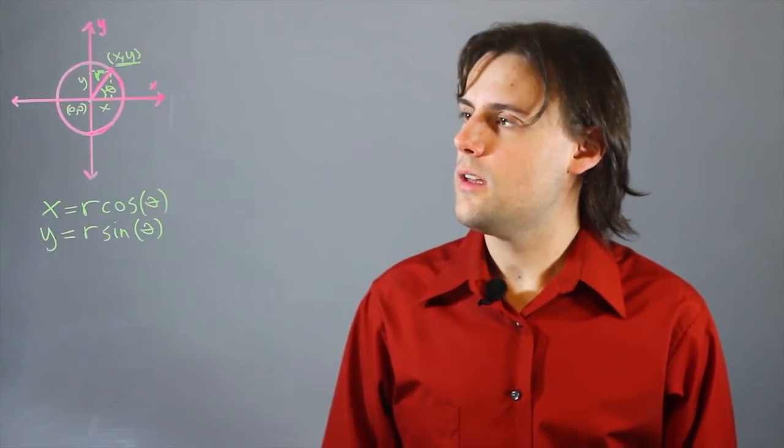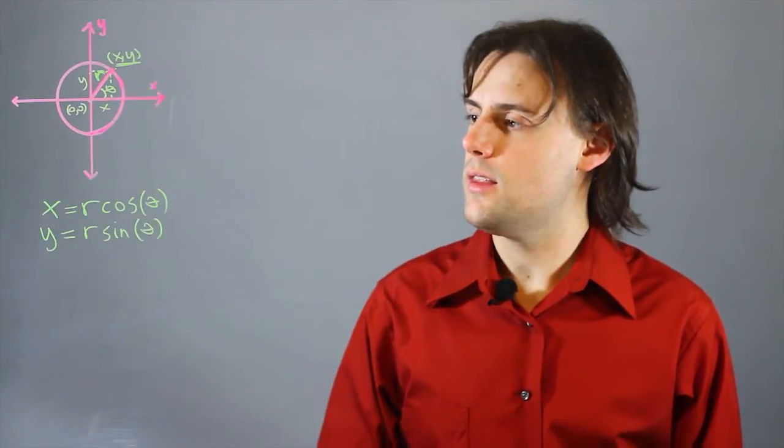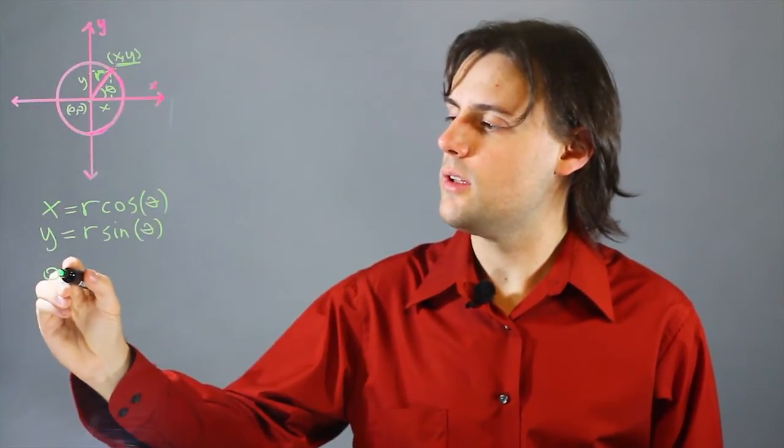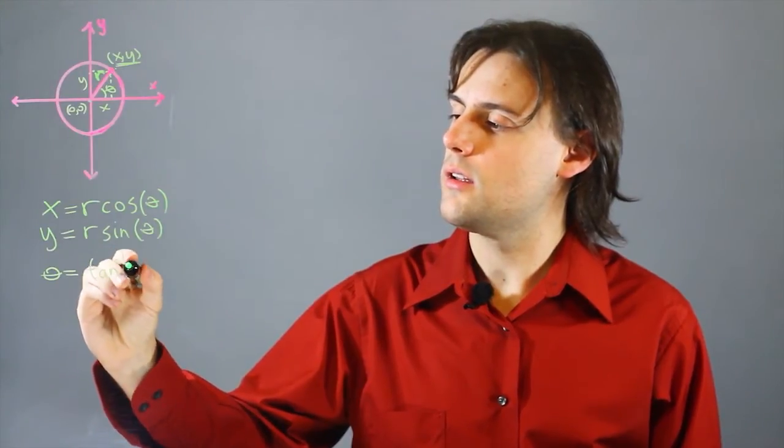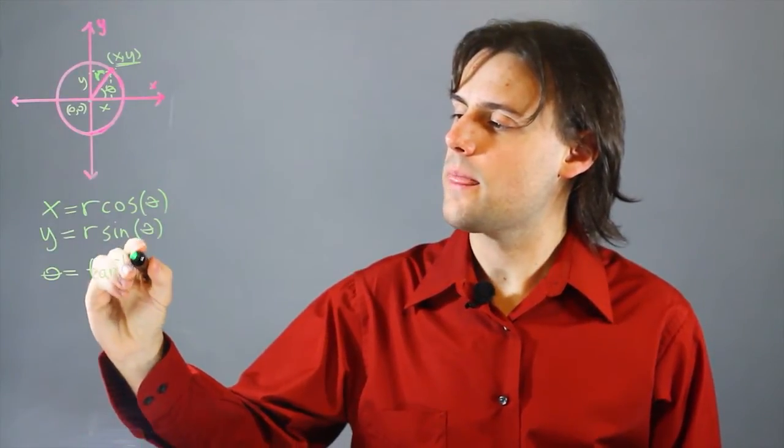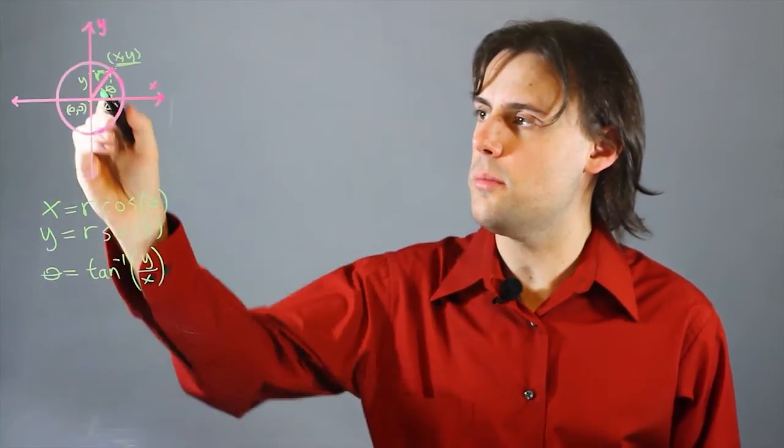So if I know the value of x and y at this coordinate point then I can solve for theta and it's going to be equal to the arc tangent of y over x which represents the slope of this line.